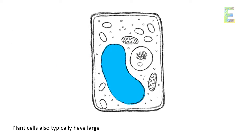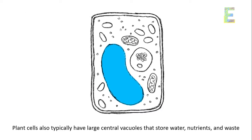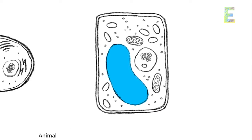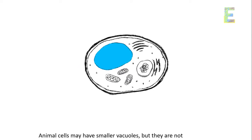Vacuoles. Plant cells also typically have large central vacuoles that store water, nutrients, and waste products. Animal cells may have smaller vacuoles, but they are not as prominent.